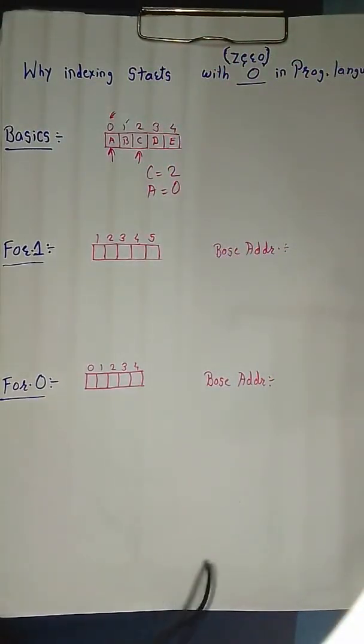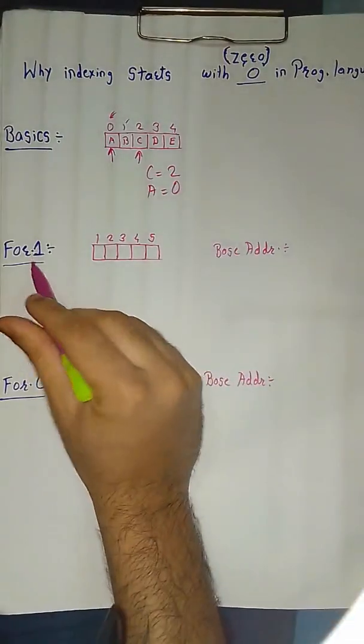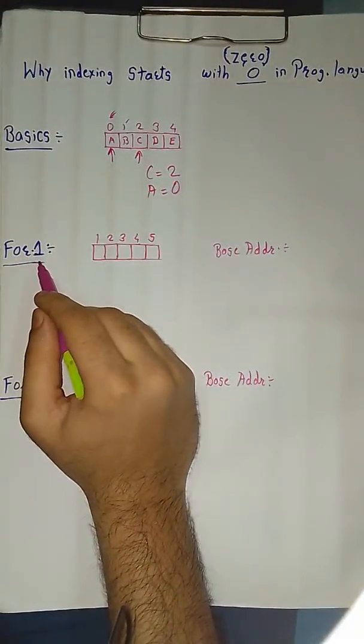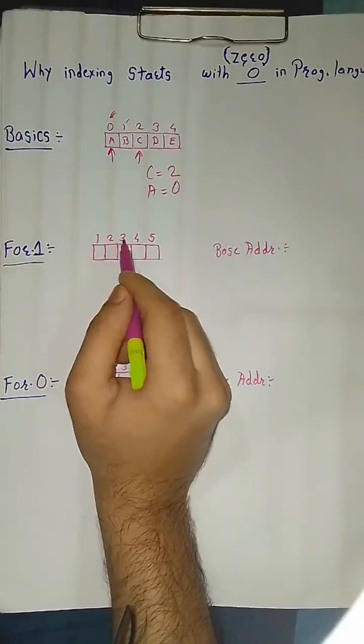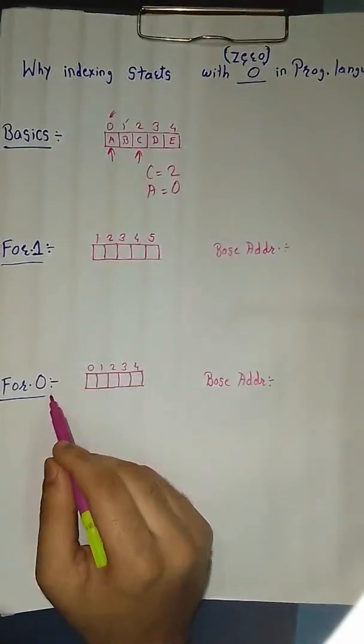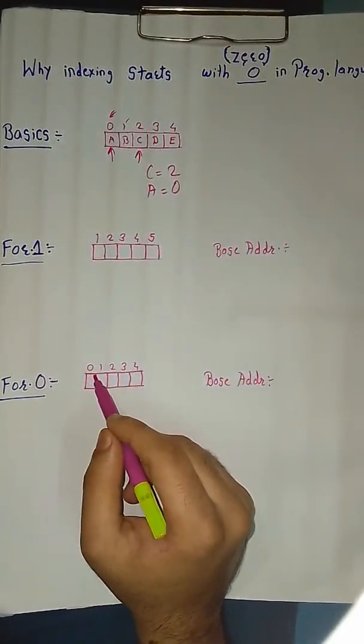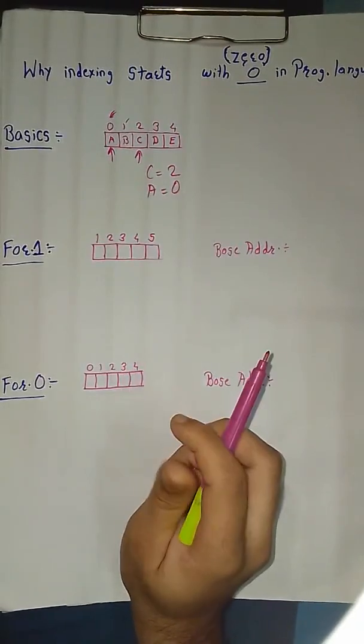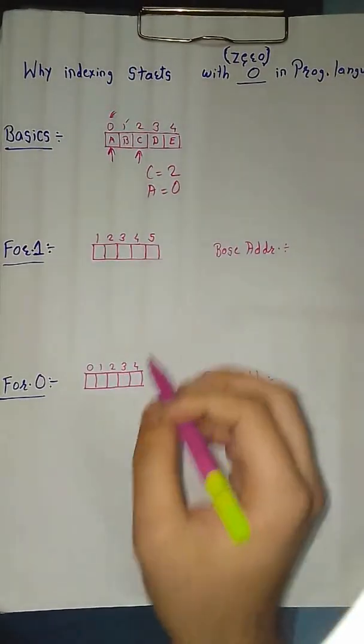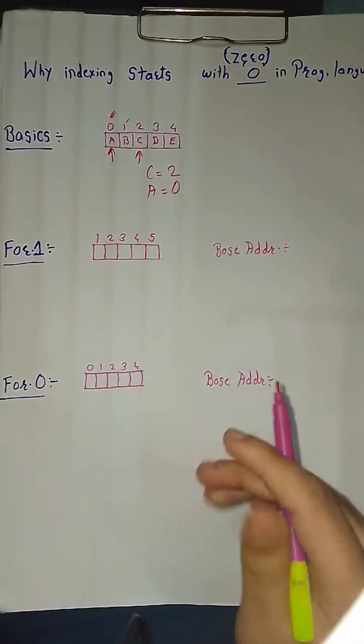So let's find out. We have taken two cases for this. This is for indexing starting from 1, 2, 3, 4, 5. And for 0, we have index starting from 0, 1, 2, 3, 4.